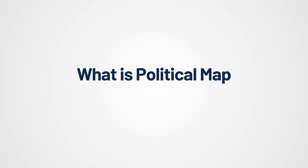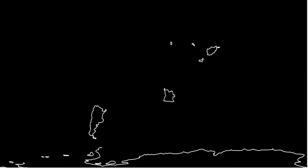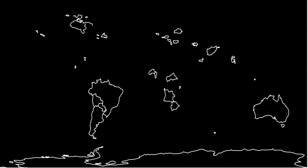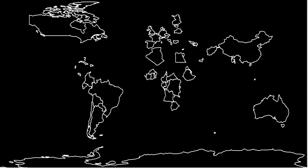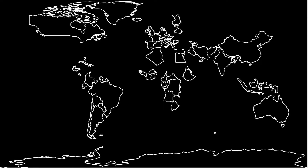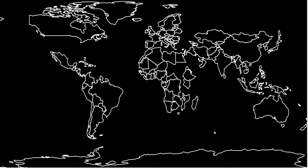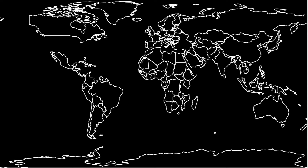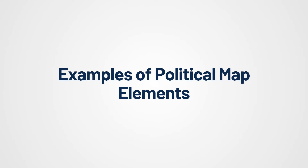What is the meaning of political map? A political map is a type of map that focuses on showing governmental boundaries and territorial divisions. Political maps are designed to highlight human-made divisions and the organization of various regions for administrative and political purposes.